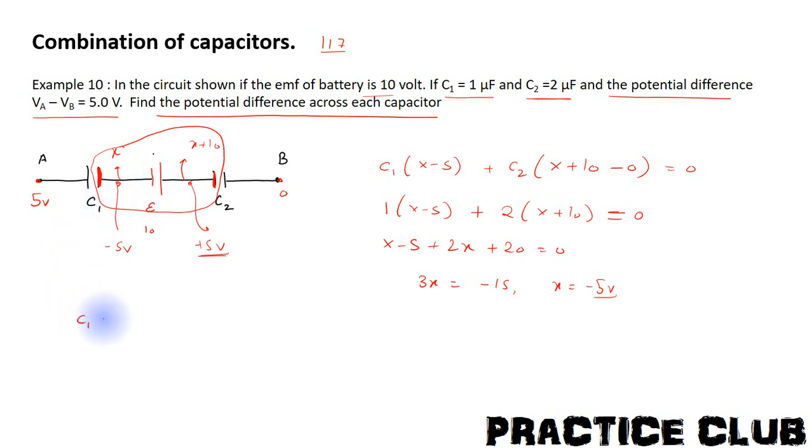Capacitor C1 to over potential difference is 10V is minus 10V. And capacitor C2 to over potential difference is 5V. We will have to find that the potential difference is 5V. Thank you.